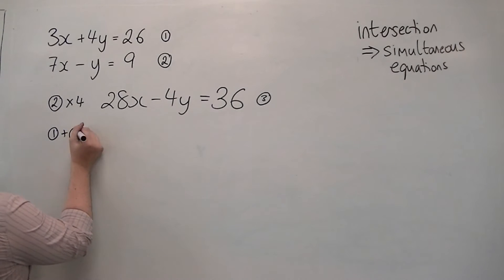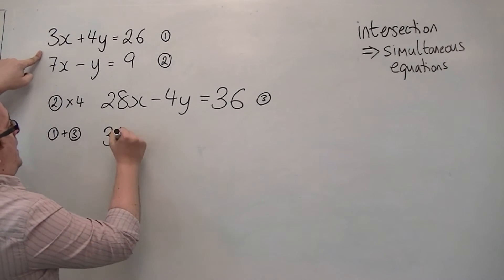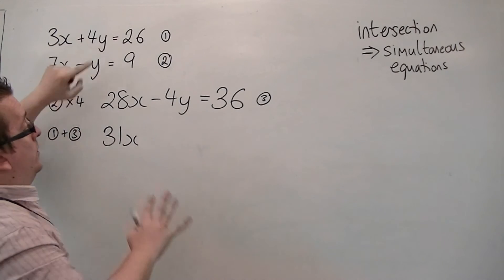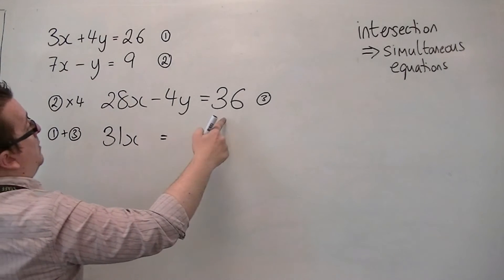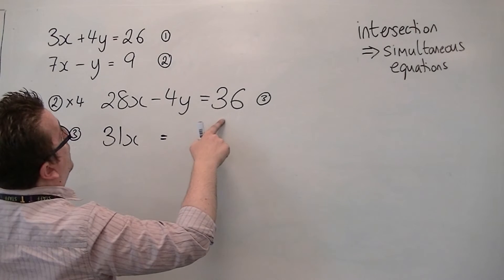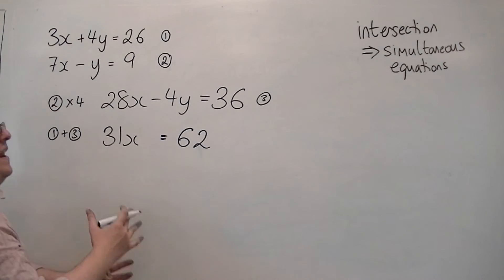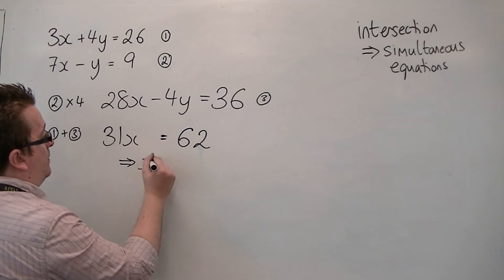That's what I designed to do. 3x plus 28x is 31x. 4y plus minus 4y is 0, so we've eliminated the y's. And you have 26 plus 36, well that's 62. So if we've got 31x is 62, then that would mean that x must be 2.